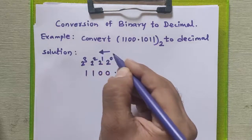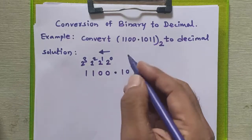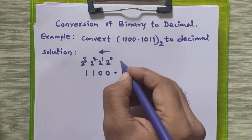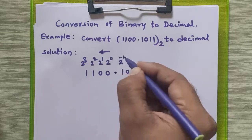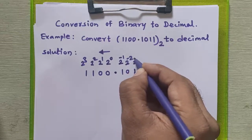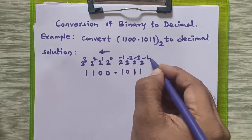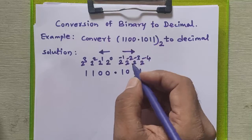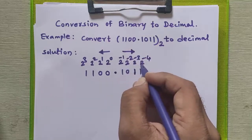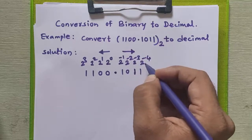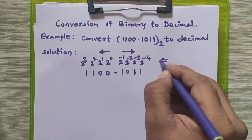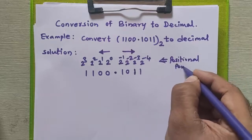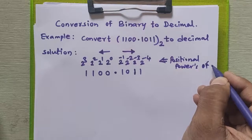When you go towards the fractional part, the positional powers of two are: two raised to minus one, two raised to minus two, two raised to minus three, two raised to minus four. It means when you write positional powers of two for the fractional part, the powers are decreasing: 2 to minus 1, 2 to minus 2, 2 to minus 3, 2 to minus 4, and so on. These are the positional powers of two.